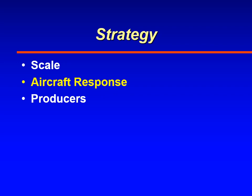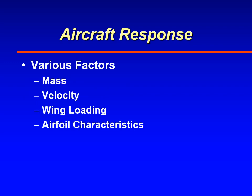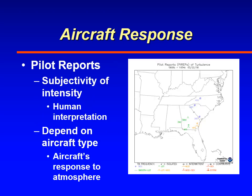The next item in strategies for turbulence avoidance is how an airplane responds to turbulence. An aircraft's response depends upon many factors, including the mass of the aircraft, its velocity, its wing loading, and its airfoil characteristics. For the same atmospheric conditions, aircraft will respond differently, and pilots will report it differently. There is much subjectivity in pilot reports, depending upon pilot experience, the type of aircraft the pilot is flying, and other factors.